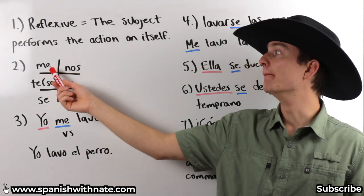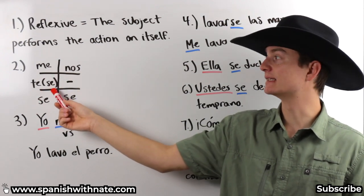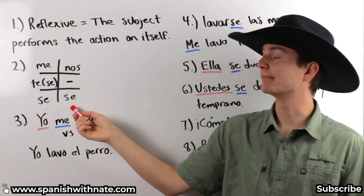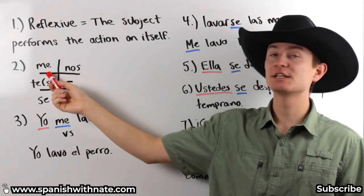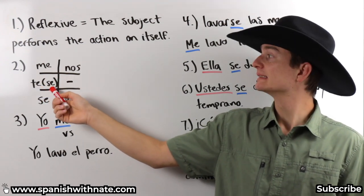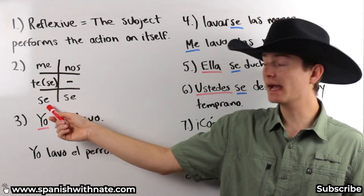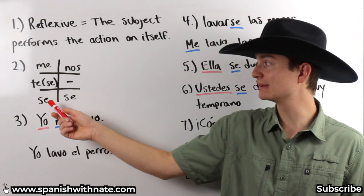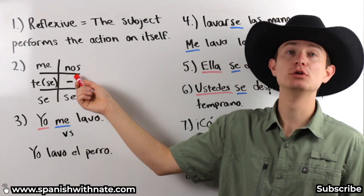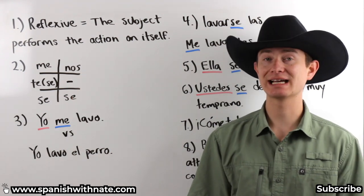Okay, we have me, te, se, se, nos, and se. Now, me is for the yo, te is for the tú, se right here is for usted. Se is for el, ella, usted. Excuse me, el, ella. Nos for nosotros. And se for ellos, ellas, ustedes.